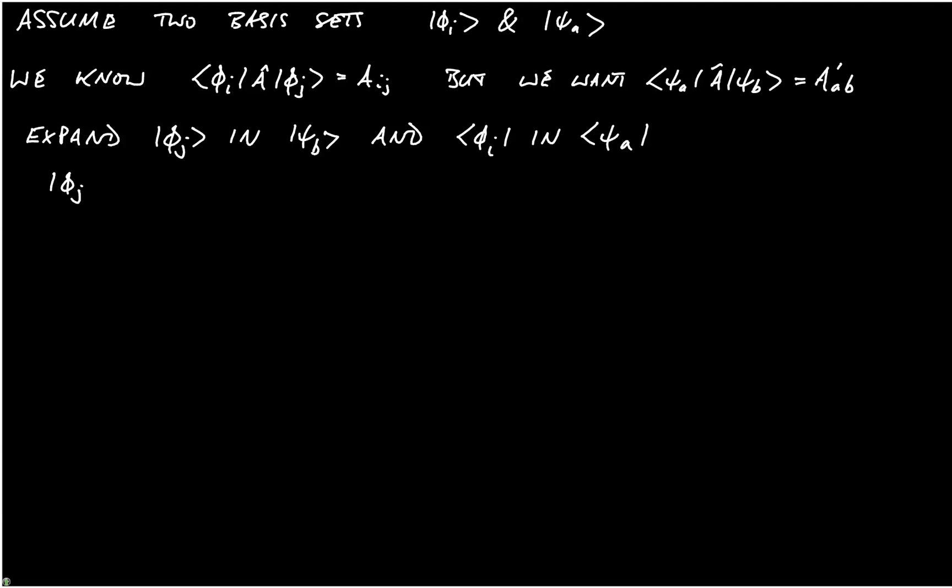So, we write ket phi_J is the sum over B of ket psi_B bra psi_B, remembering that that actually is the identity operator acting on phi_J. And I'll just note that here. This is actually the identity.